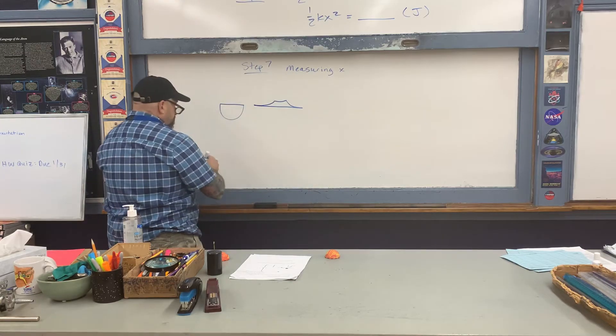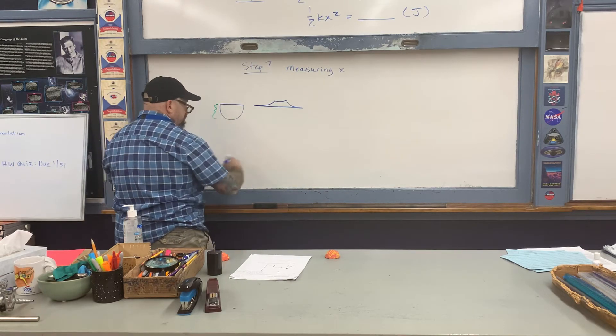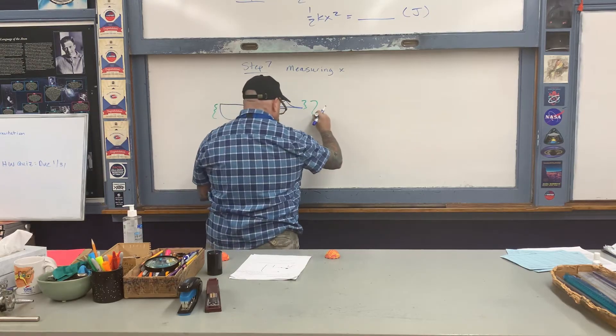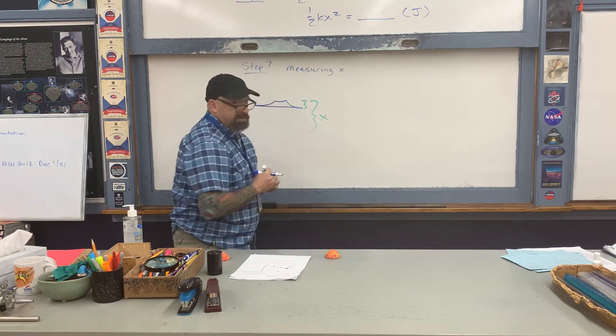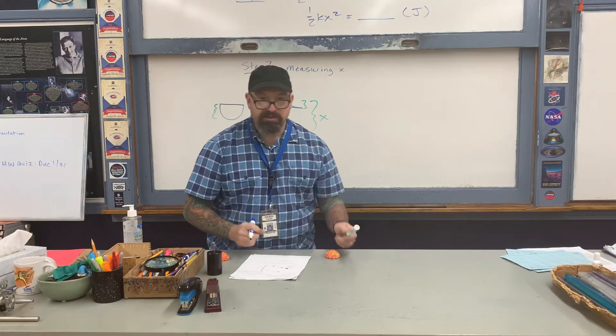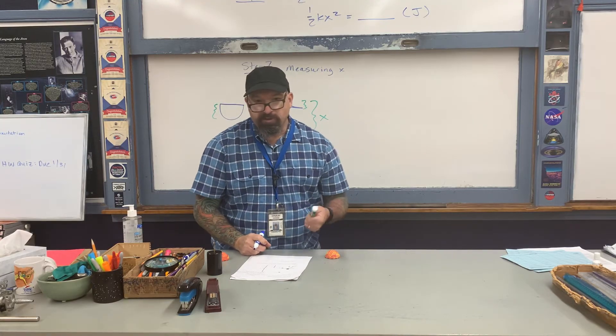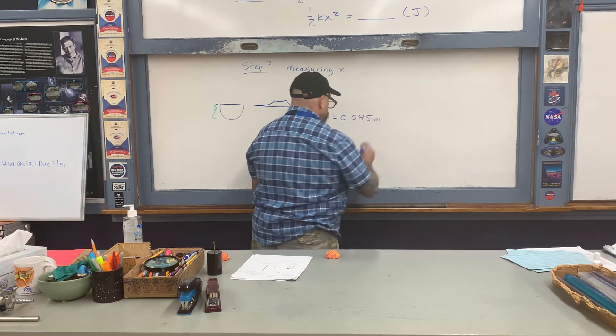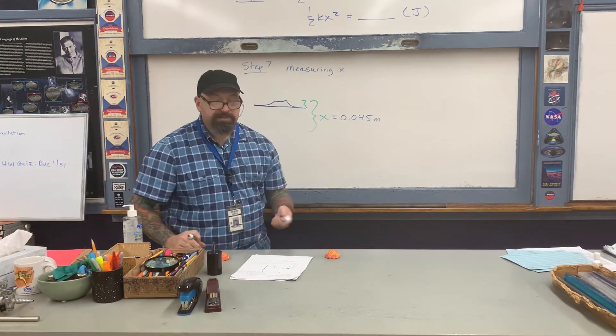We're going to consider this distance here plus this distance here—that total distance is going to be the distance x. I've measured that distance earlier using a ruler. It's about four and a half centimeters, so the value of x is 0.045 meters. That's what step seven is.